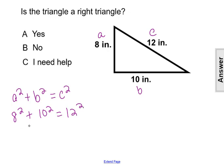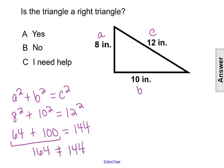If we simplify both sides by squaring our numbers, we'll have 64 plus 100 equals 144. And that sum of 64 plus 100 is 164, but that does not equal 144.